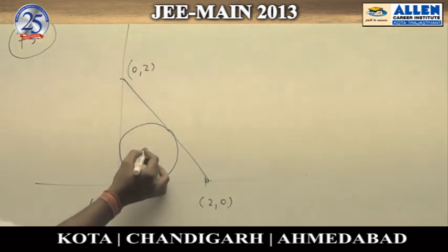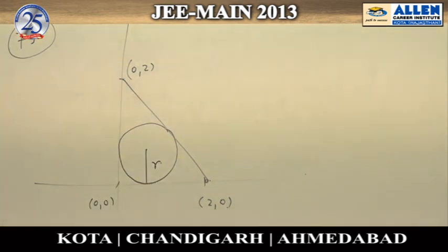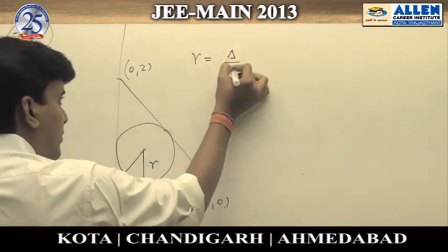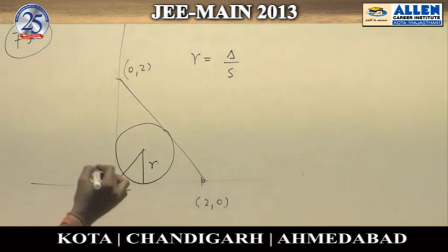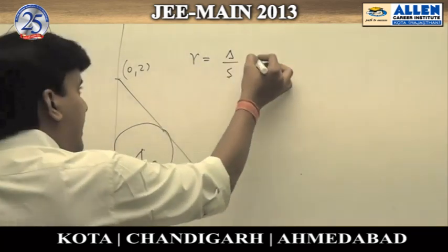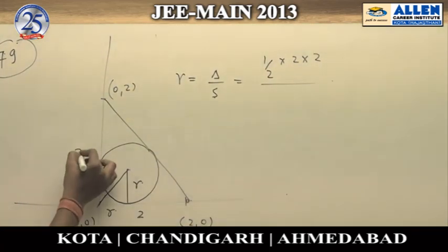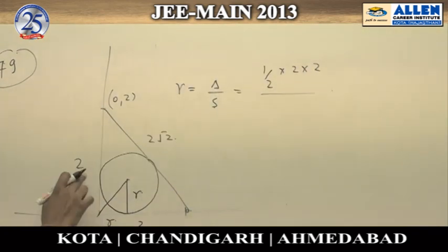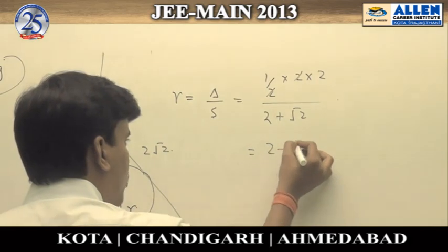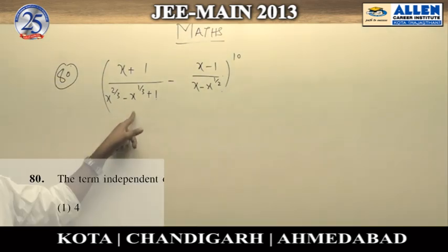We need the X coordinate of the incenter. Assuming R to be the inradius, the X coordinate of the incenter equals R. Using the formula R = Δ/s: the area Δ = (1/2) × 2 × 2 = 2, and the semi-perimeter s = (2 + 2 + 2√2)/2 = 2 + √2. So R = 2/(2 + √2), which simplifies to 2 − √2. The correct answer is 2 − √2.